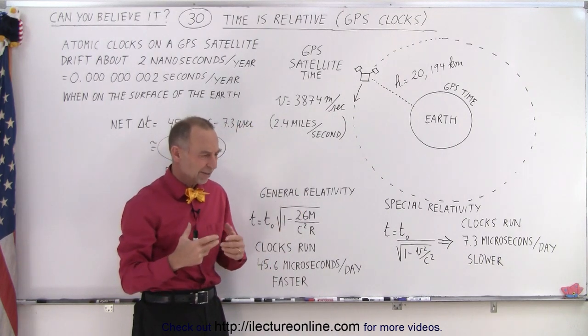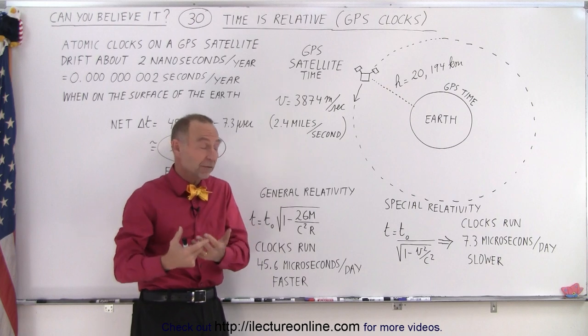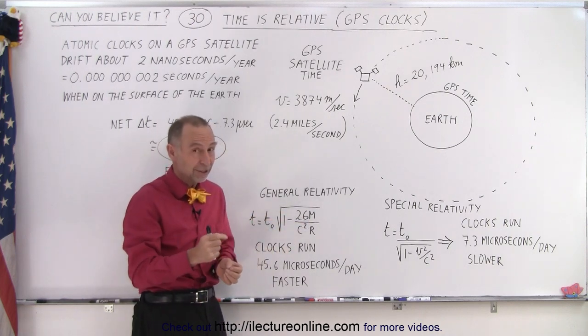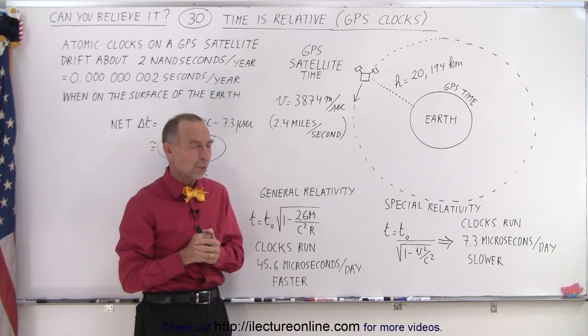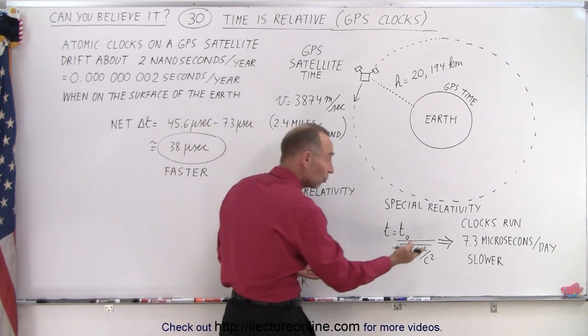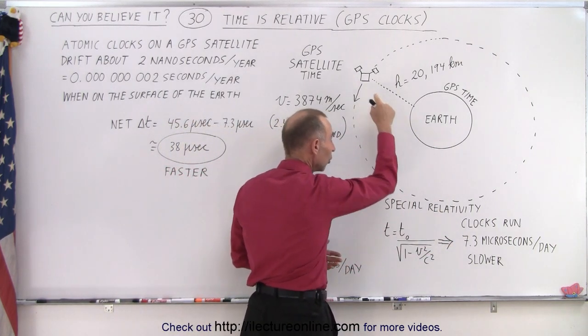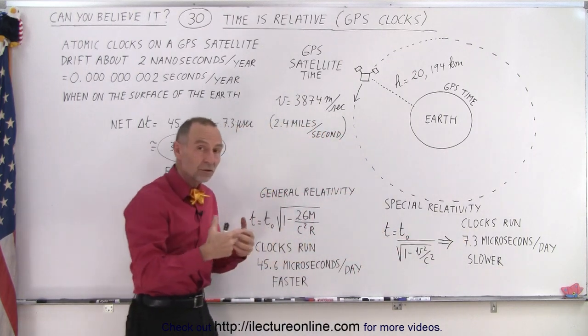Now you may say 7.3 microseconds, a microsecond is a millionth of a second. Who cares? But in GPS, that is an enormous amount of time, we'll show you in just a moment why.